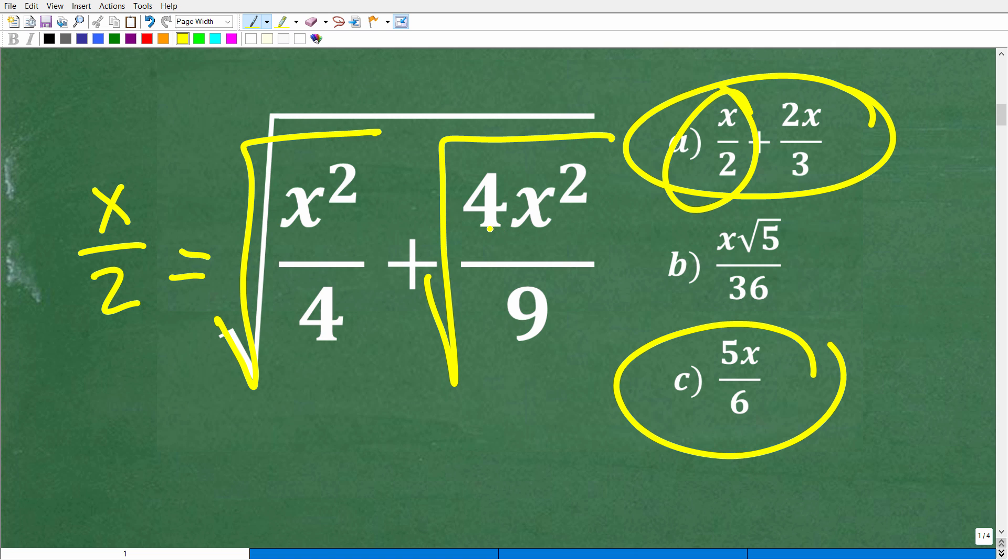If we take the square root of x squared over 4, that could be like x over 2. And if I take the square root of 4x squared, that could be like 2x. And the square root of 9 is 3. So this looks pretty good, the numbers seem to jive. So I'm going to select that. Well, of course, that is wrong.